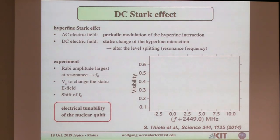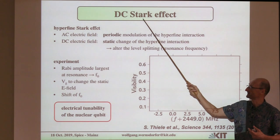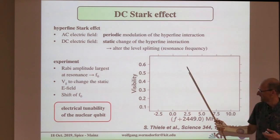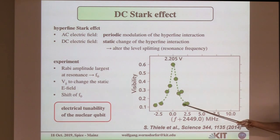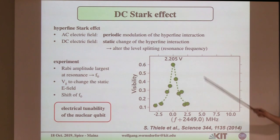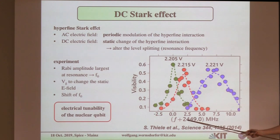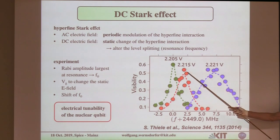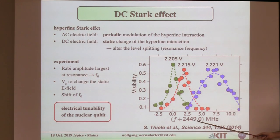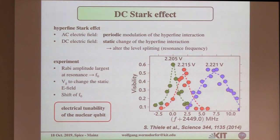I also want to mention quickly that we don't have only the AC Stark effect but also the DC Stark effect — for a given gate voltage I get a resonance at a certain frequency. If I change the gate, I see that these frequencies shift. The amplitude changes as well. So with gates, we can tune resonance frequencies. This is a very important tool we'll need as soon as we play with more than one nuclear spin, when we need to tune resonance frequencies.